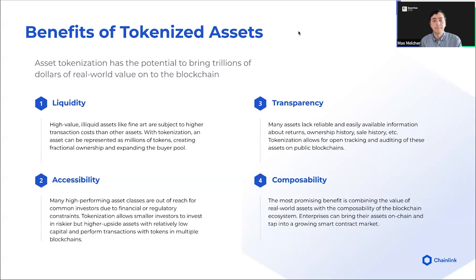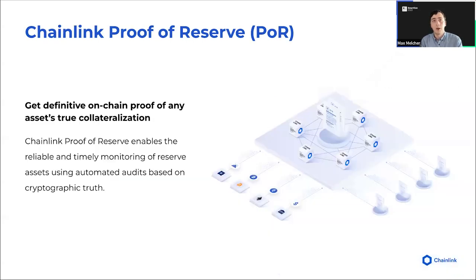And that leads us to Proof of Reserve. With any product, it's important that you identify the problem you're really trying to solve. Today, we've identified that there is a large reliance on these asset issuers and inherent trust assumptions with these tokenized assets. They control the asset. They can emit more. They can burn. And in many ways, this control and trust devalues a lot of the security principles of blockchain and decentralized finance. So Chainlink Proof of Reserve aims to minimize these trust assumptions by bringing reserve data for these assets on-chain, so that both the asset issuer, DeFi protocols, and general users can see at all times that the assets they carry are backed one-to-one.